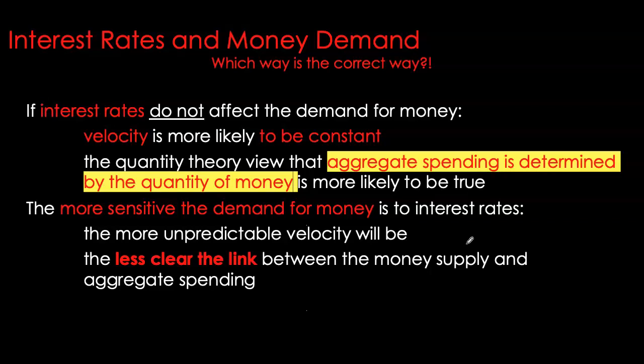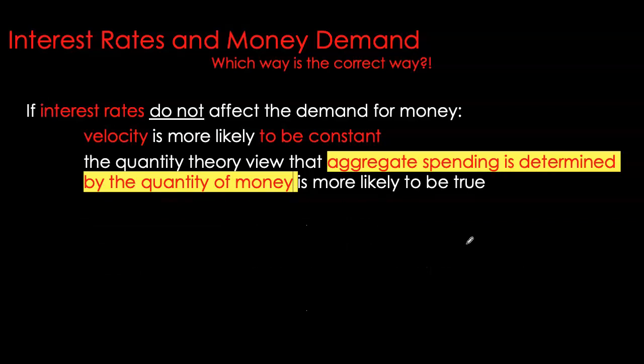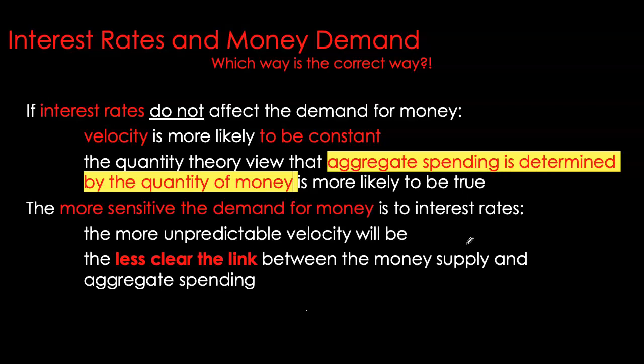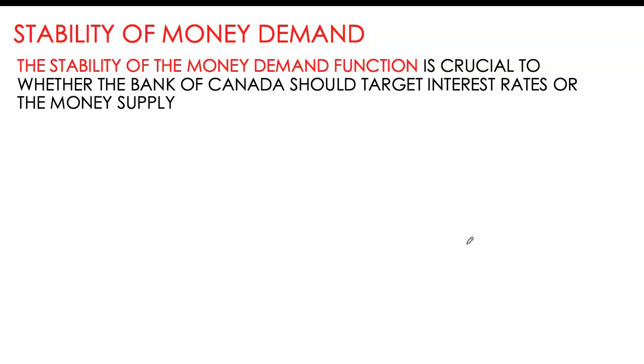Which framework is correct? If interest rates do not affect money demand, you observe a relatively stable money demand function, meaning velocity is also more likely to be stable. In that case, the quantity theory of money holds and we can use money growth rate to affect aggregate spending and inflation. However, if the money demand function is highly unstable and very sensitive to interest rate fluctuations, velocity cannot be predicted, and we can no longer use money growth rate to control inflation or nominal GDP in the short run. Stability of the money demand function is the key ingredient.